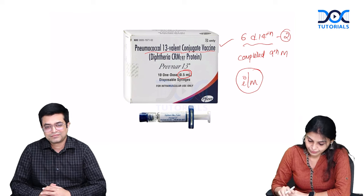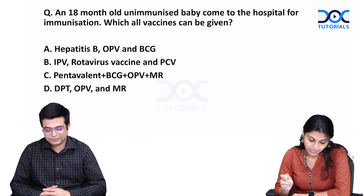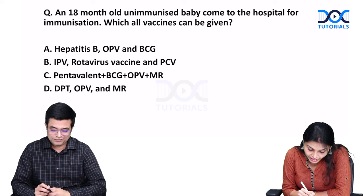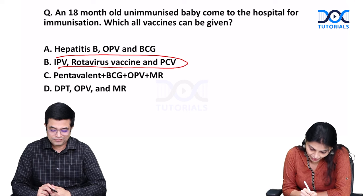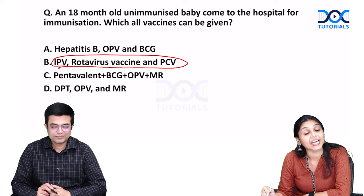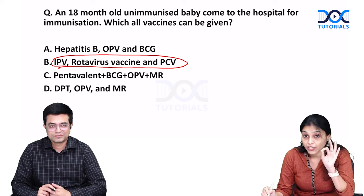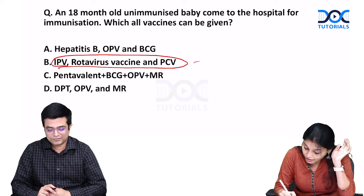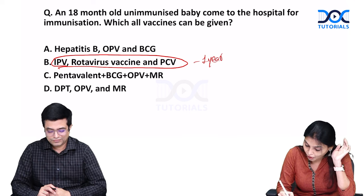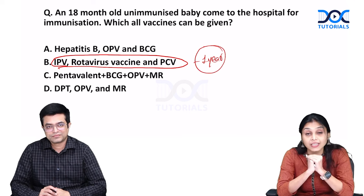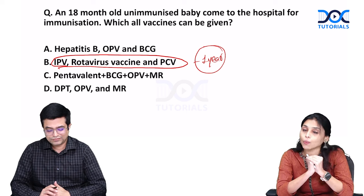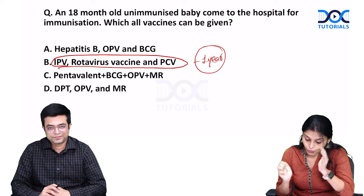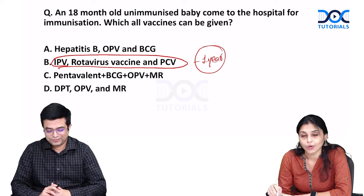The question is whether option B can be given. All three - IPV, rotavirus, and PCV - as per the National Immunization Schedule can be given only up to one year of age. They cannot be given beyond one year of age, so option B is also not the answer.